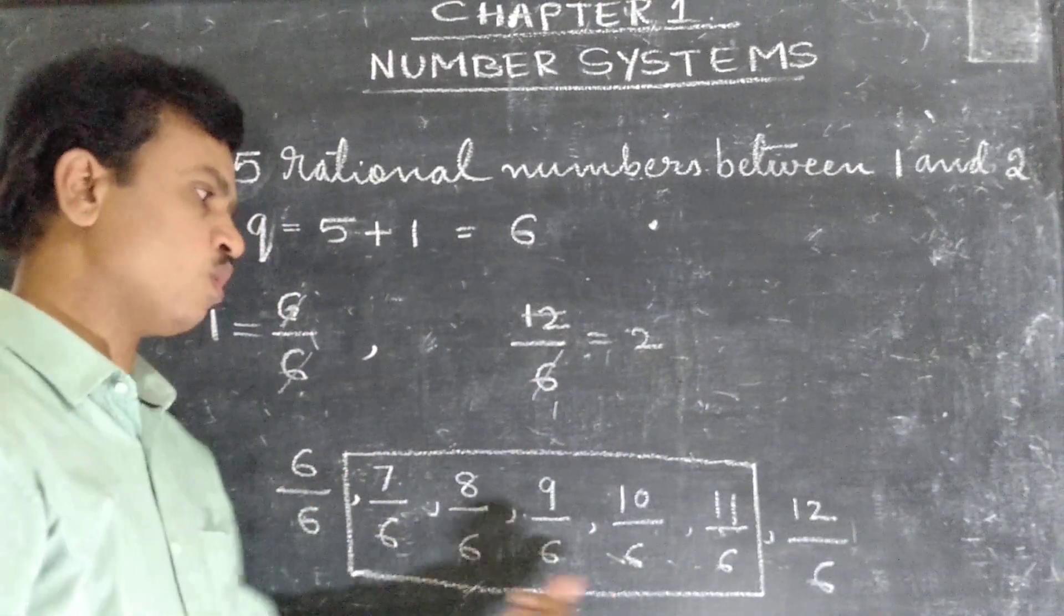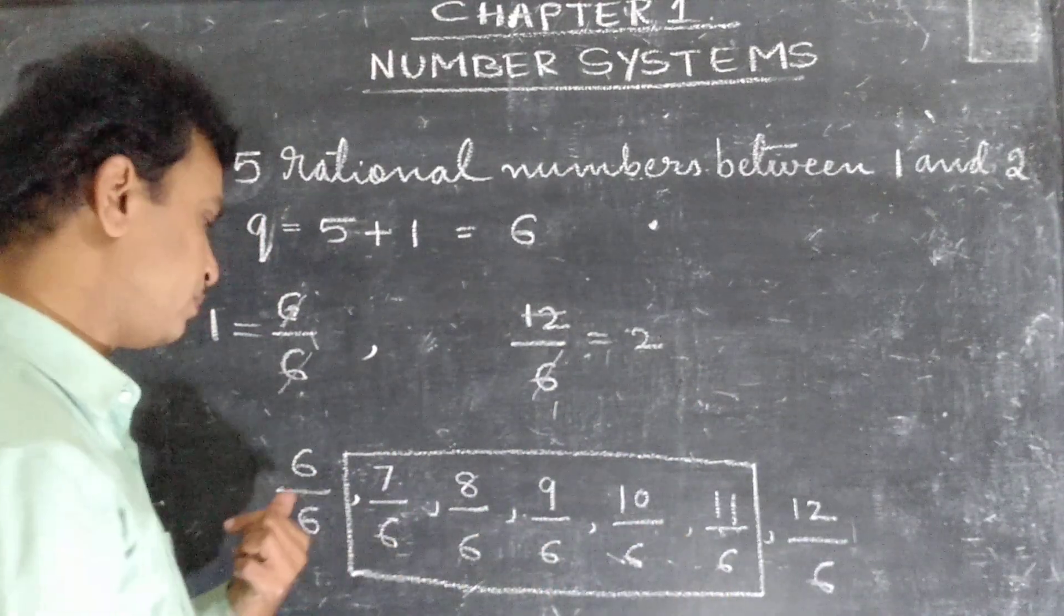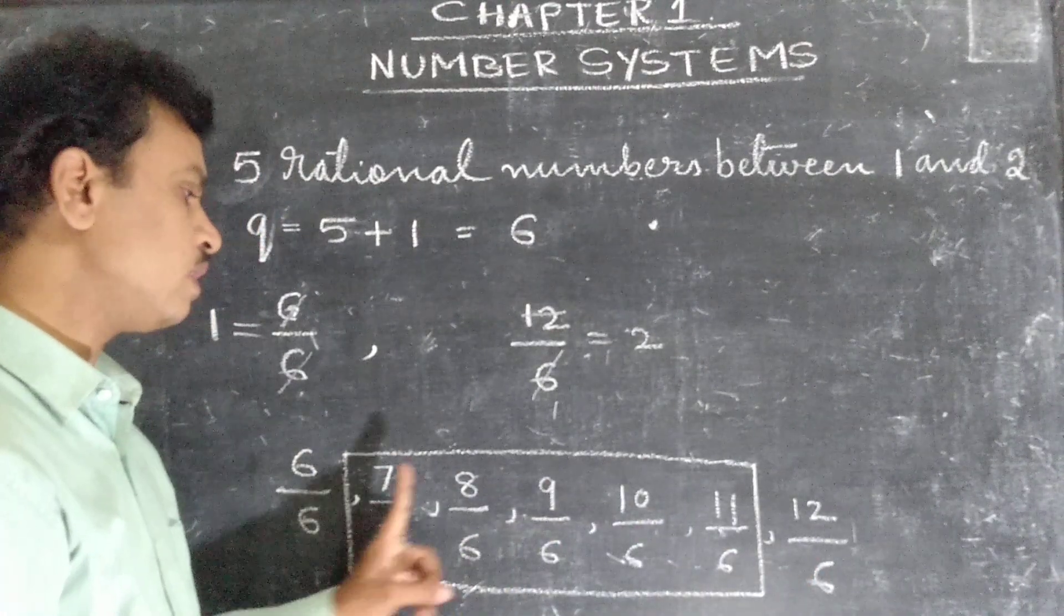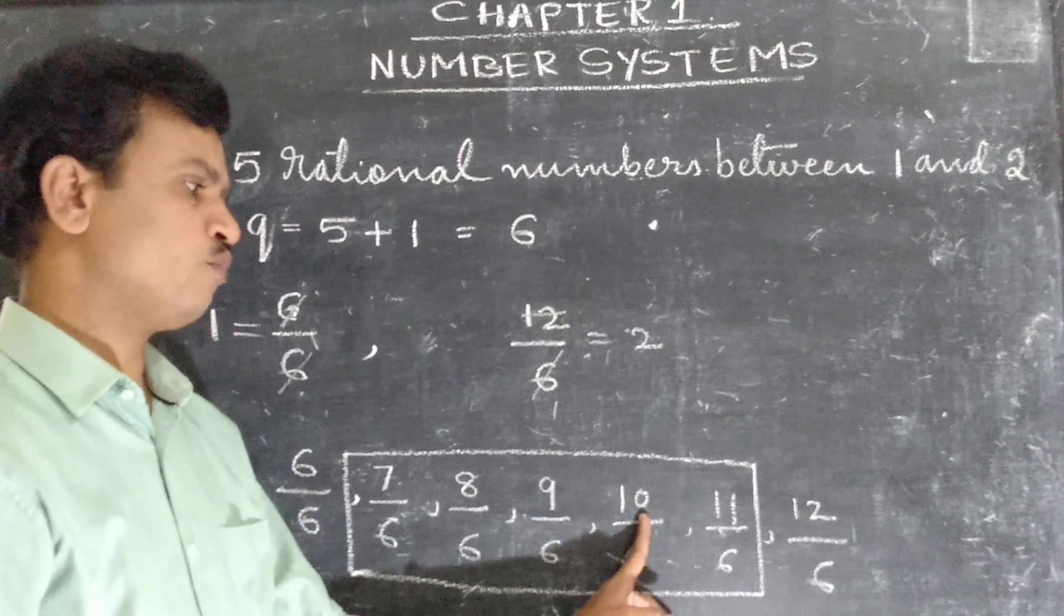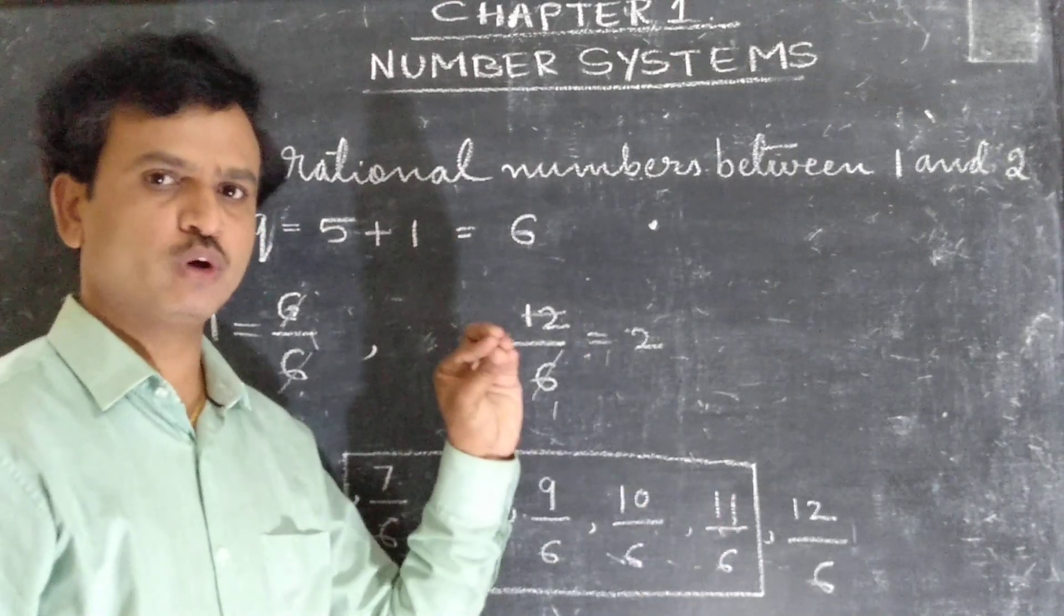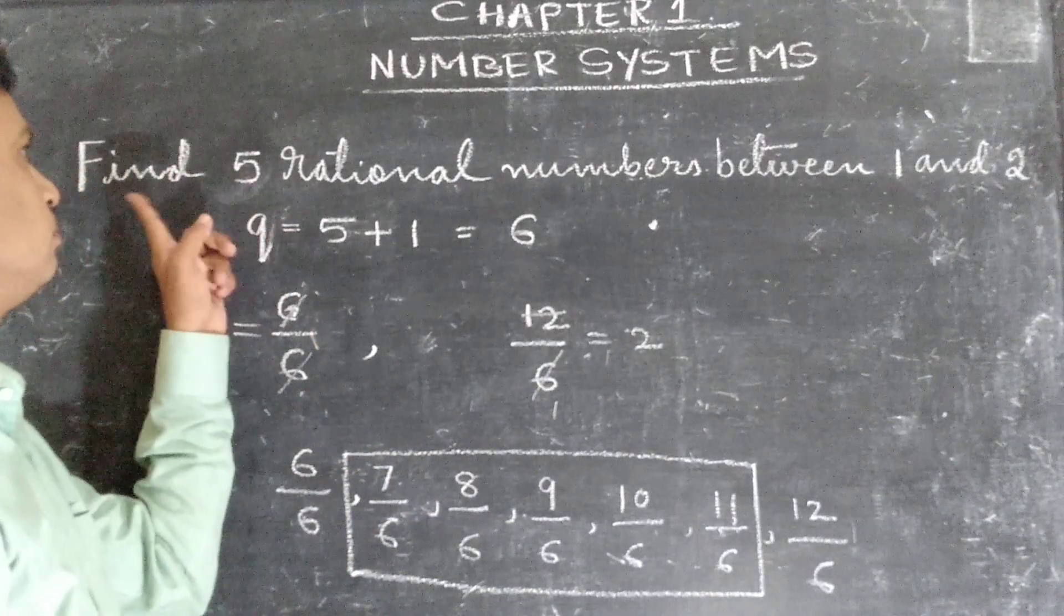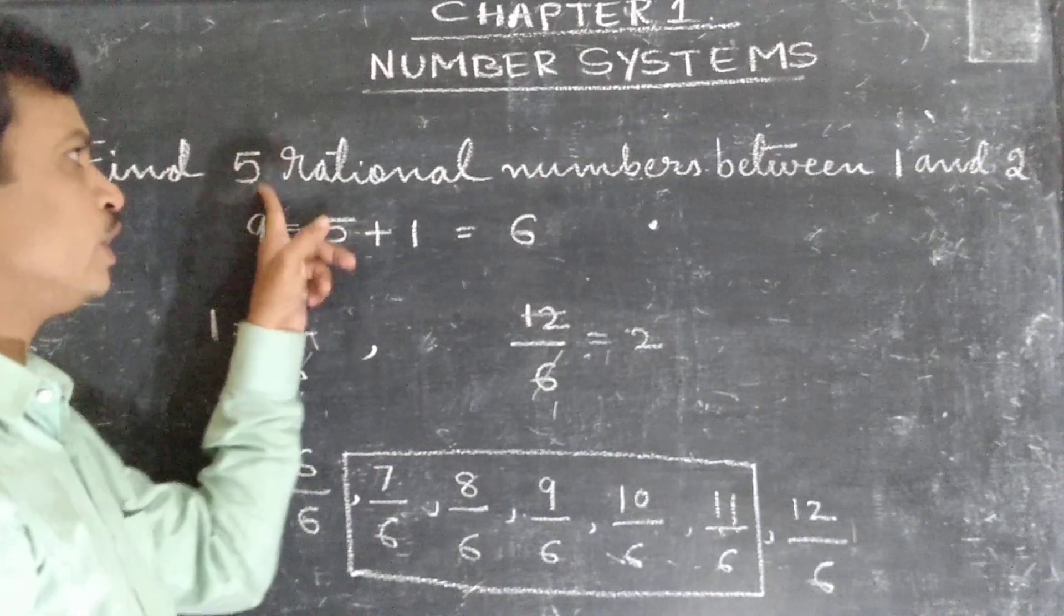So all these are rational numbers in between 1 and 2. How many rational numbers did we get here? 1, 2, 3, 4, 5. So we got 5 rational numbers in between 1 and 2. The question asks for 5 rational numbers.